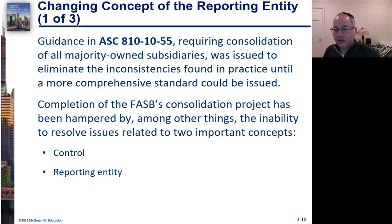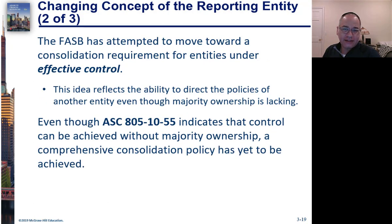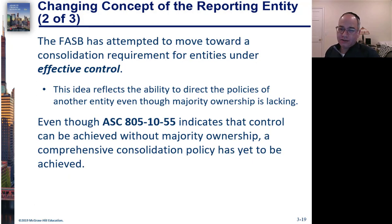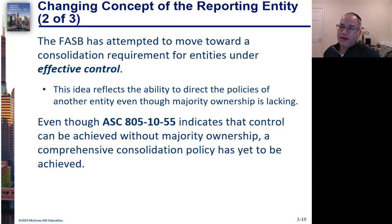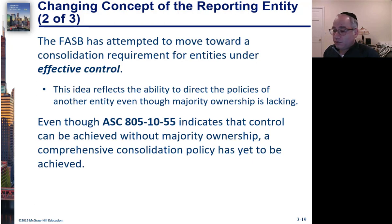There are real questions about when the parent has control and what the reporting entity is. The FASB has moved towards the idea of effective control — the idea that the parent has the ability to direct the policies of the subsidiary, regardless of whether it has more than 50% of the stock. Eventually the FASB may adopt a system more like variable interest entities, where you consider not only effective control but also risk. This could be evaluated by looking at the governance structure of the subsidiary — for example, how many people does the parent appoint to the subsidiary's board of directors.